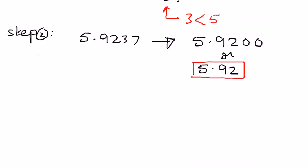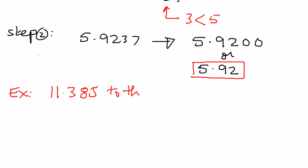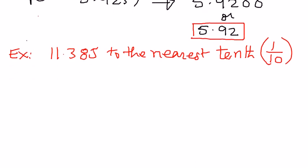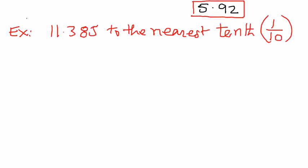Let's look at another example. This time we want to round the number 11.385 to the nearest tenths place. What is the tenths place? We can think about it as 1 over 10. So we'll write out the different steps so that we can better understand the process.